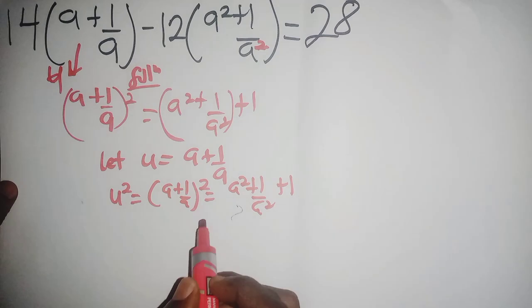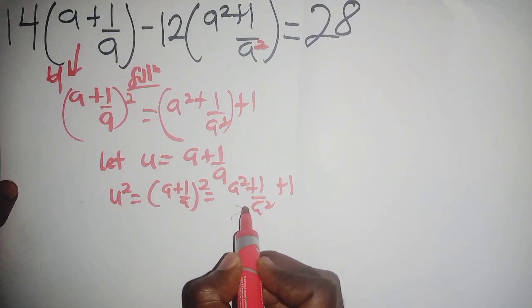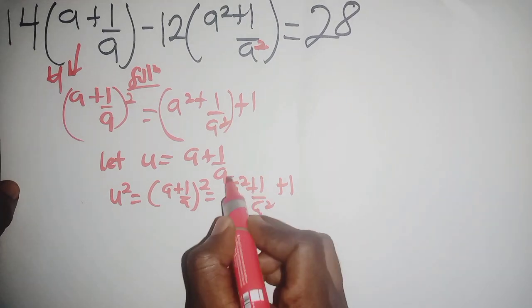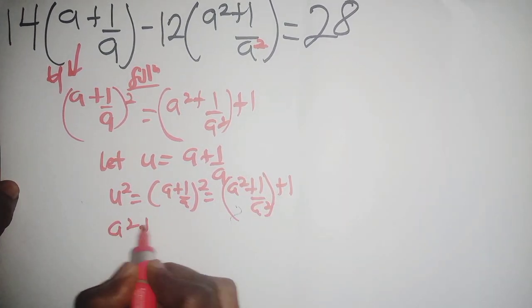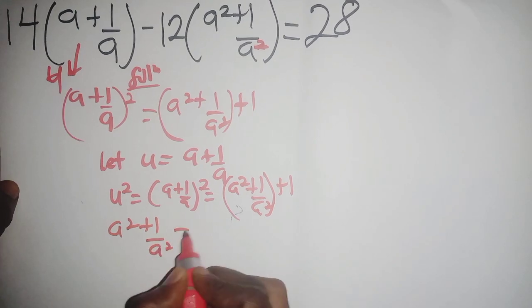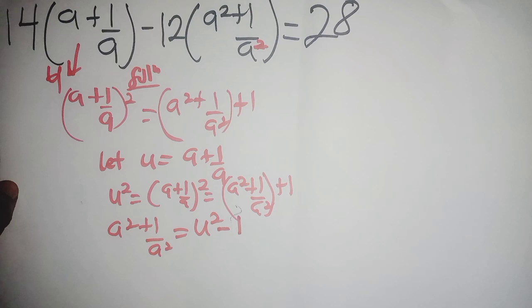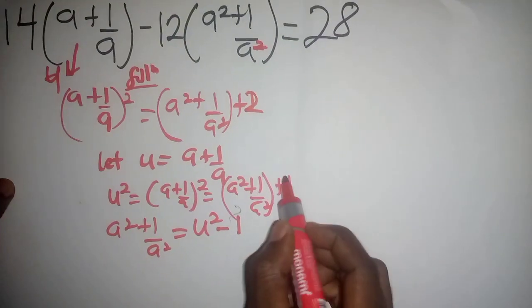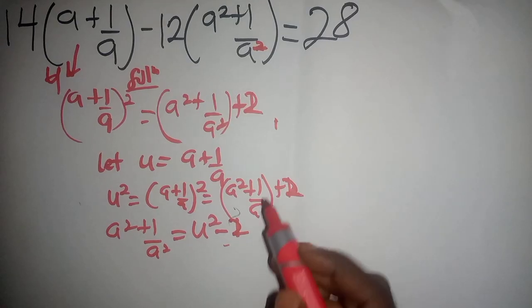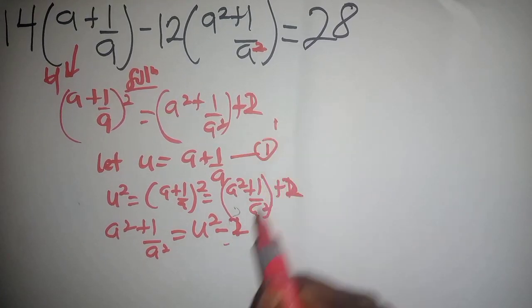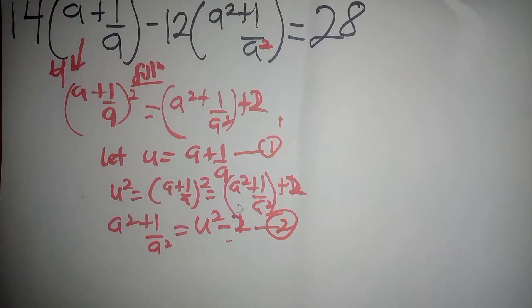Making a² + 1/a² the subject, we get a² + 1/a² = u² - 2. Let me call u = a + 1/a equation one, and a² + 1/a² = u² - 2 equation two.